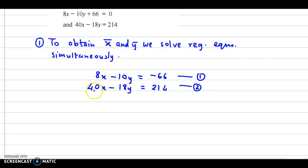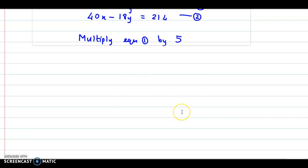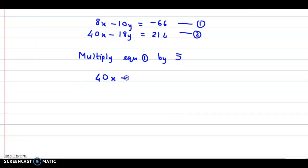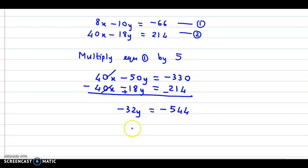Now x's coefficient equalize. So we multiply equation 1 by 5. Multiplying equation 1 by 5, we get 40x minus 50y equals minus 330. And then equation number 2, 40x minus 18y equals 214. So let us subtract the 2 equations.